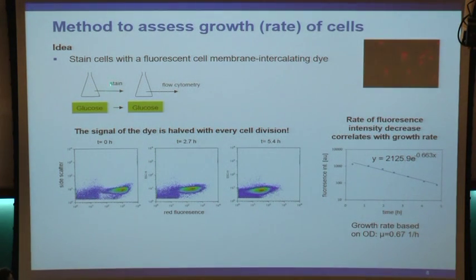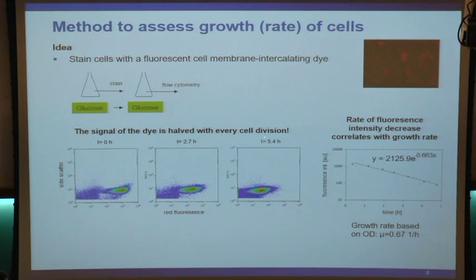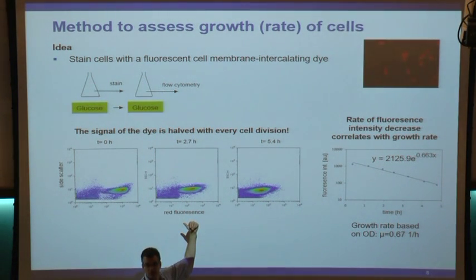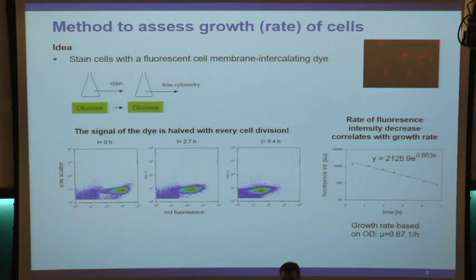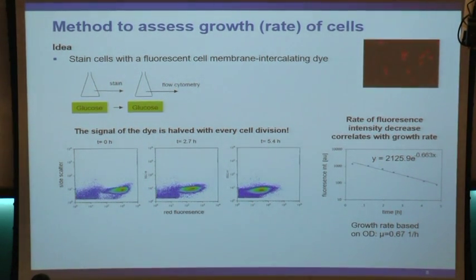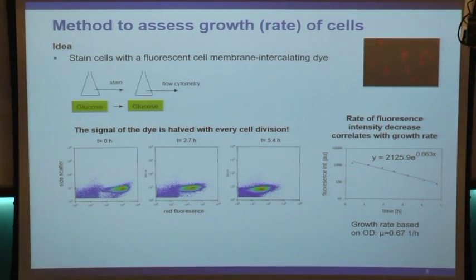As time goes by, the cloud of cells moves to the left, meaning cells lose fluorescence. Taking the median fluorescence of this cloud and plotting it on a log scale as a function of time, there is an exponential decay of fluorescence. The rate of this decay corresponds to the growth rate determined classically by measuring optical density over time. So this assay, where fluorescence halves with every division, works pretty well.